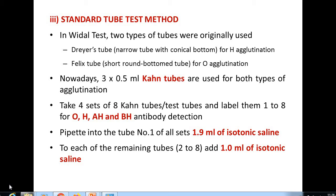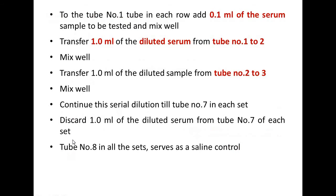For the procedure: pipette 1.9 ml of isotonic saline solution into tube number one of all sets. For the remaining tubes, numbers two through eight, add 1 ml of isotonic saline to each.